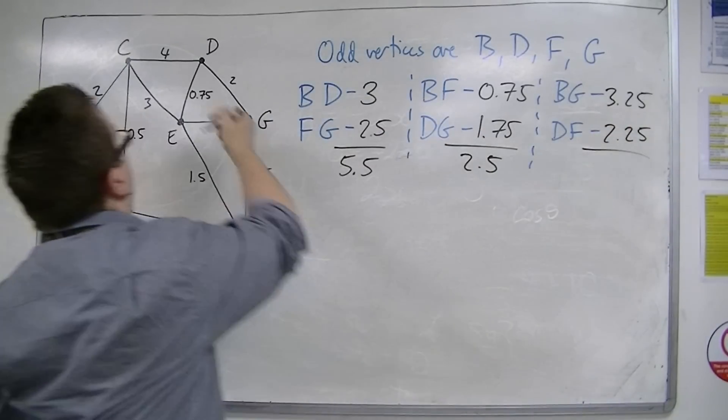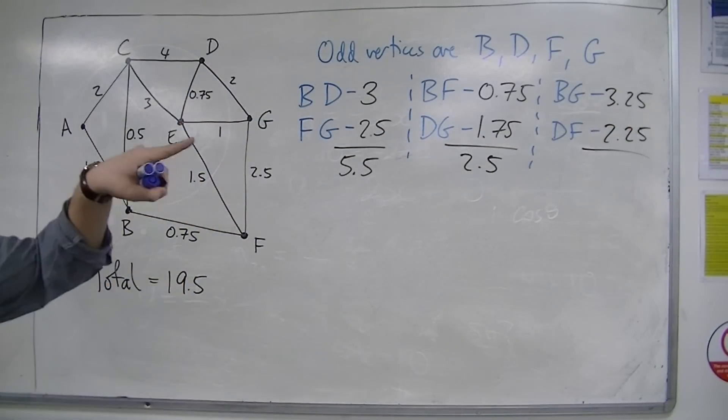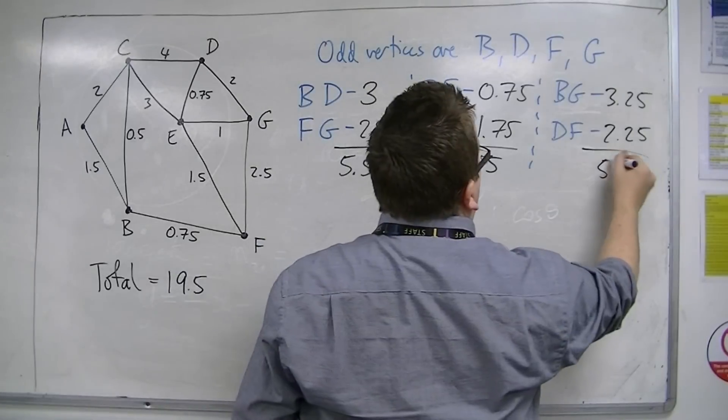OK, so 2.25 going D, E, F. So added together, that would make 5.5.